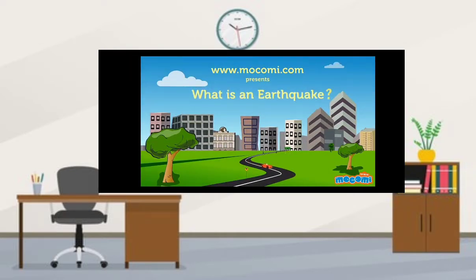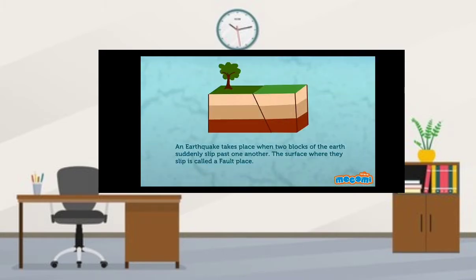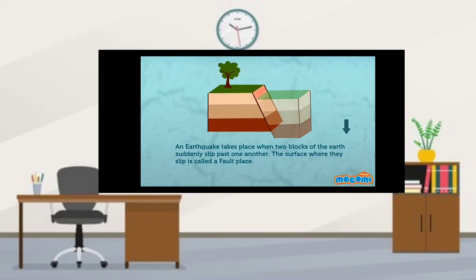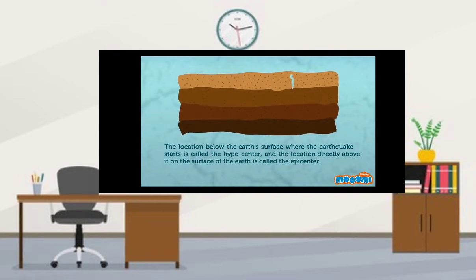What is an earthquake? An earthquake takes place when two blocks of the earth suddenly slip past one another. The surface where the slip occurs is called a fault plane. The location below the earth's surface where the earthquake starts is called the hypocenter, and the location directly above it on the surface of the earth is called the epicenter.